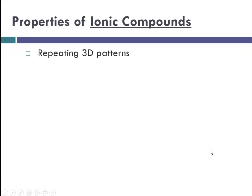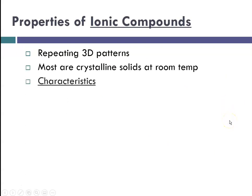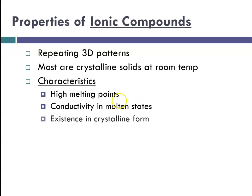Some properties of ionic compounds, they have this repeating 3D pattern. Most are crystalline solids at room temperature, with a few exceptions here and there. Some characteristics of ionic compounds, they tend to have high melting points, because remember, there's this force of attraction between the positive and negative ions. They are conductive in molten states. They typically exist in crystalline form.